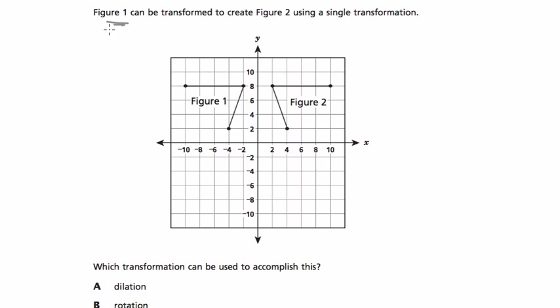Let's start by reading the problem. It says that figure one can be transformed to create figure two. So that just means we're taking figure one, and then it's being transformed. That means it's either being rotated or reflected or whatever, and we're getting figure two.